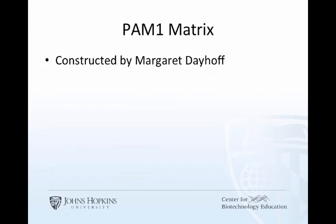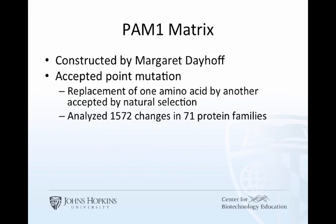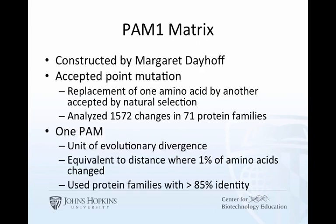The PAM1 matrix was generated by Margaret Dayhoff, who collected related proteins and their structures. The term PAM actually comes from accepted point mutation, or APM, but PAM is easier to say than APM. The idea is to use the mutation rate in very closely related proteins — analyzing changes in protein families and which changes are accepted in nature, as they presumably maintain function. One PAM is defined as a unit of distance of evolutionary divergence in which 1% of the total amino acids have changed. To do that, you've got to use very closely related proteins, and she used protein families with greater than 85% identity — very different from the BLOSUM approach that we'll also see.